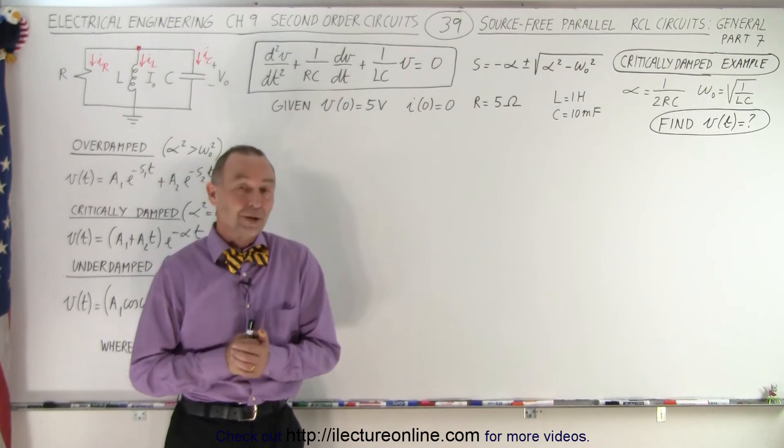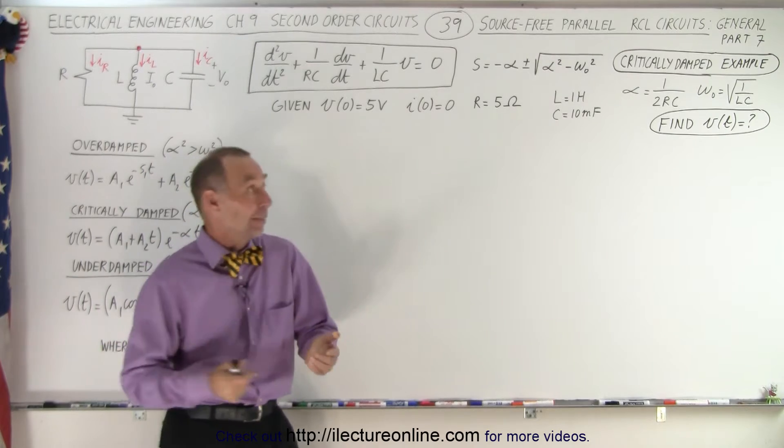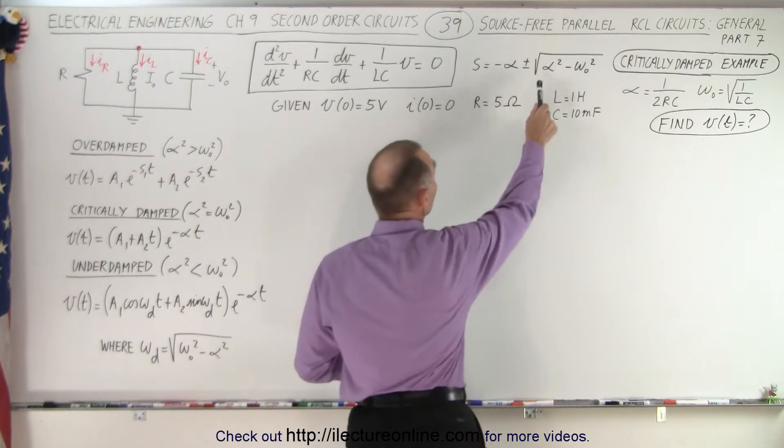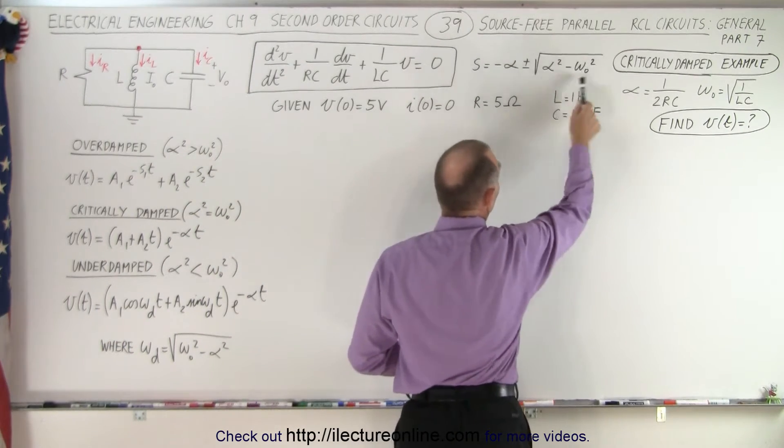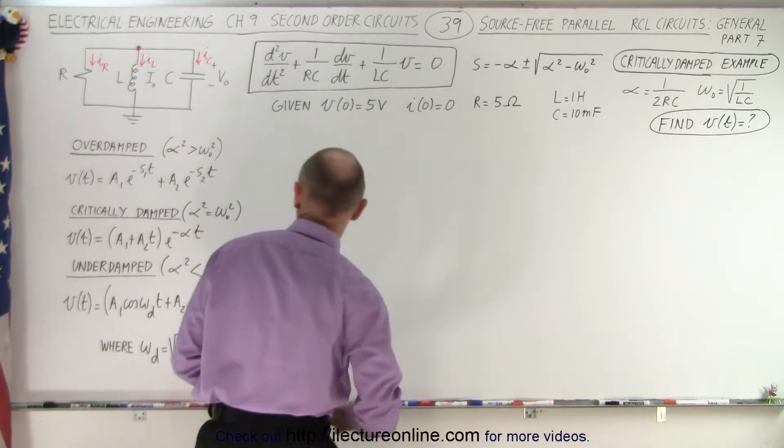Welcome to Electronline. Our next example is a critically damped example. A critically damped example means that the alpha equals the omega sub naught so that the radical goes to zero. It's actually the easier of the cases.